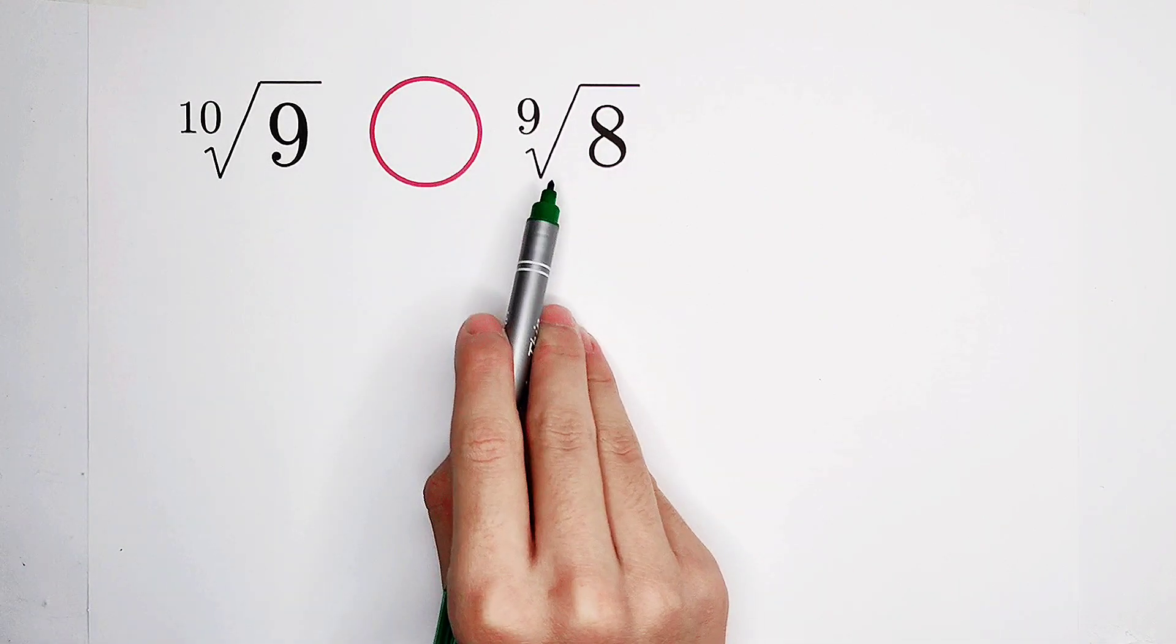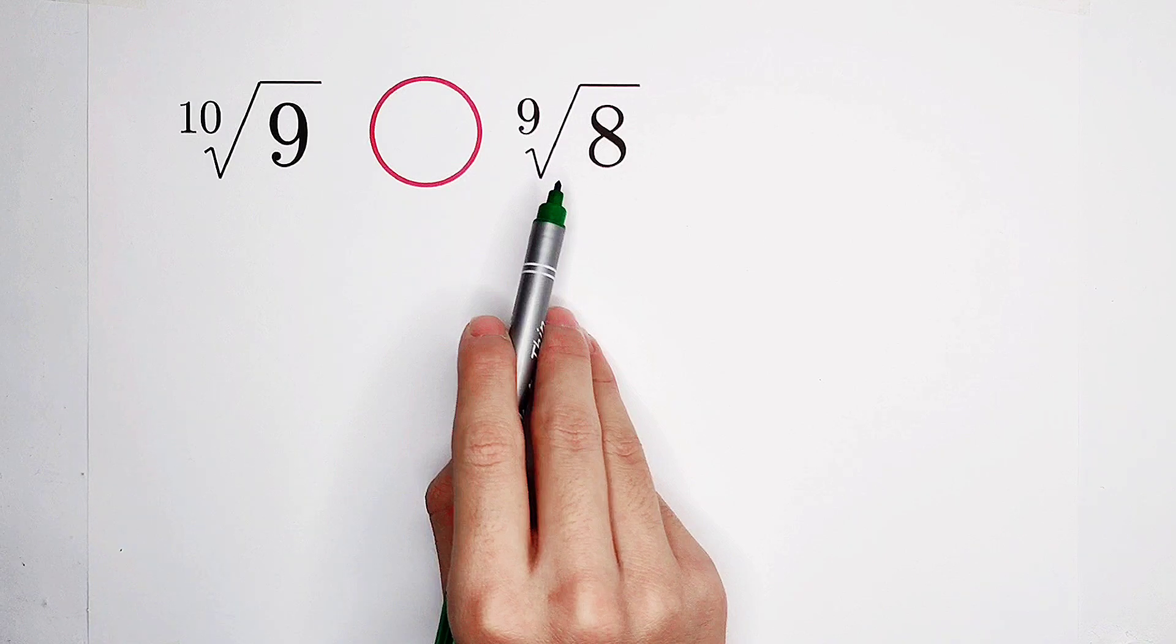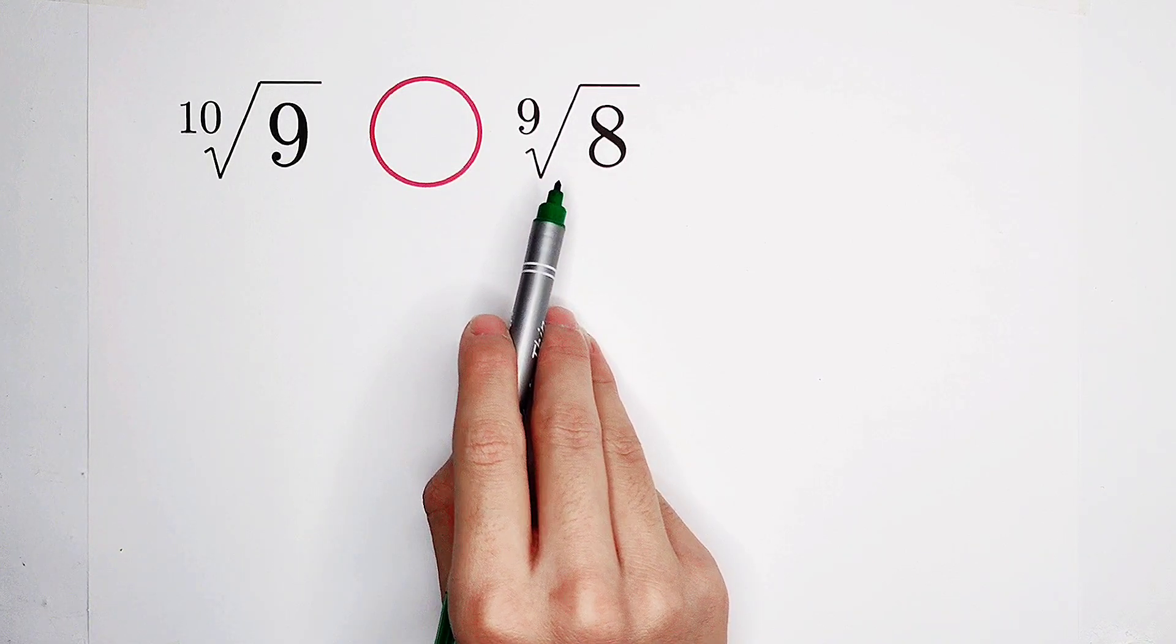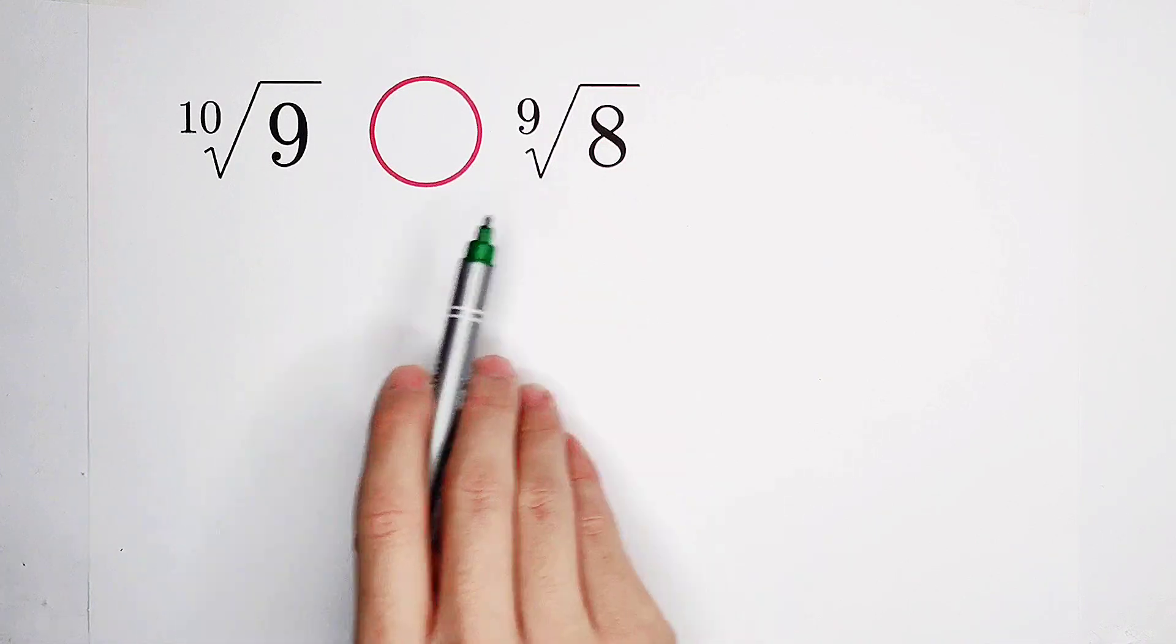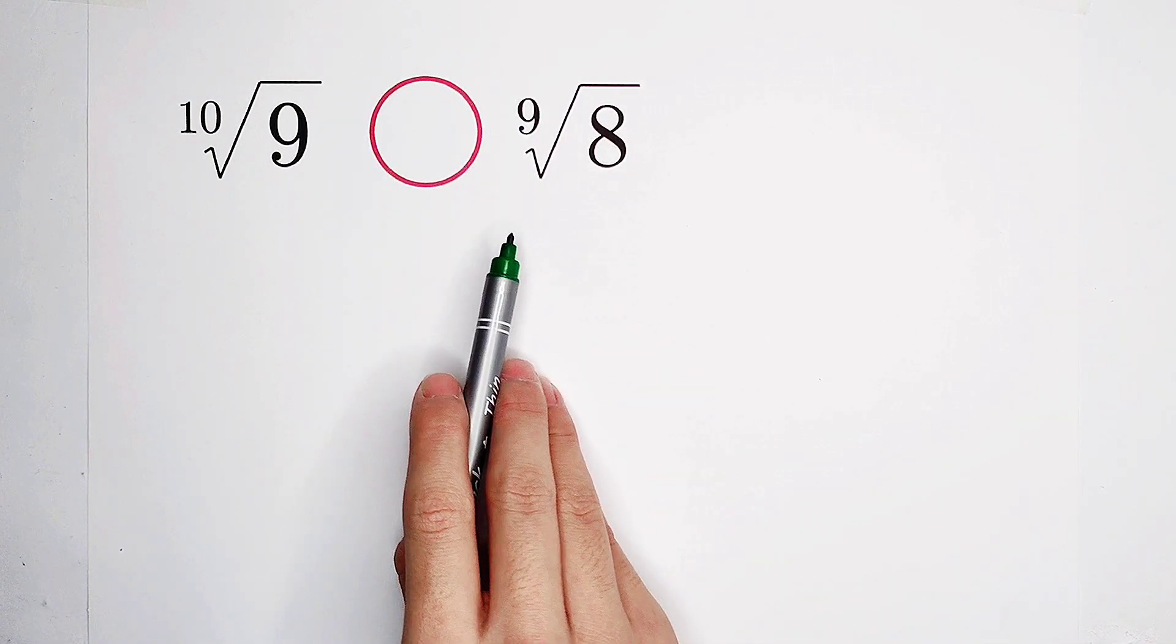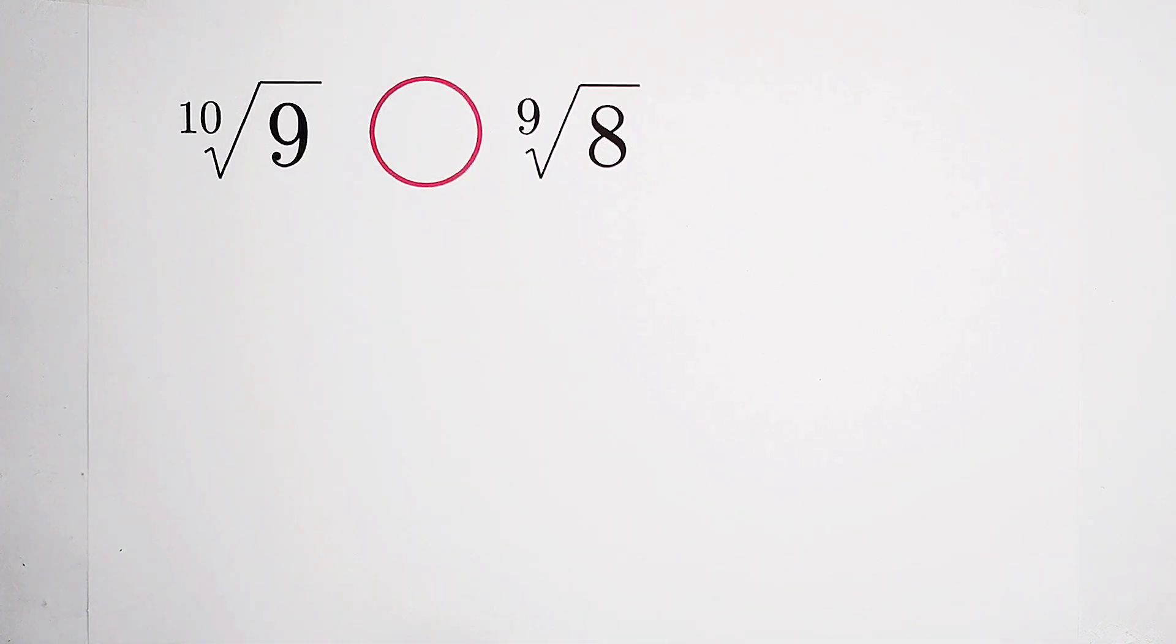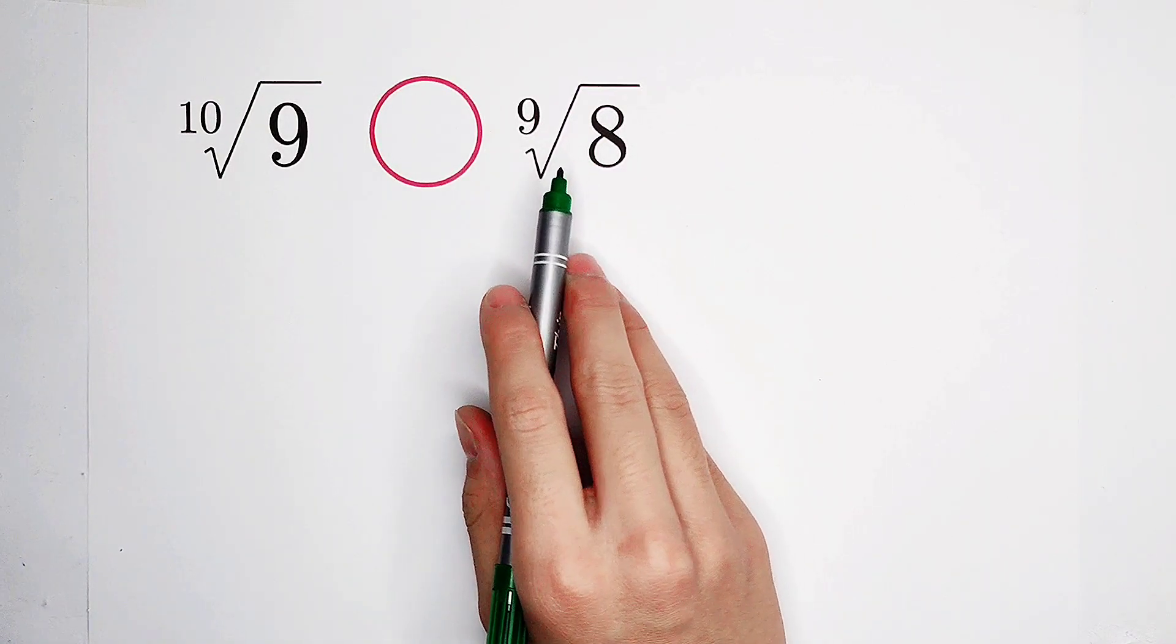Clearly, root root. We hate roots. We always hate roots. So we can raise both sides to the power of 90, 9 times 10. Then the problem will be solved. There won't be any roots anymore. So now let's do it.